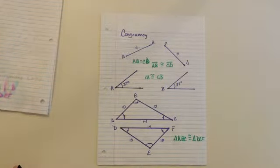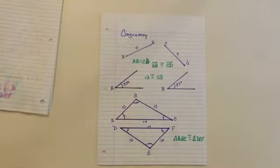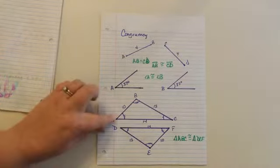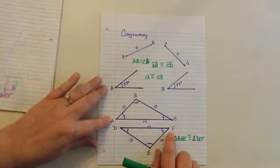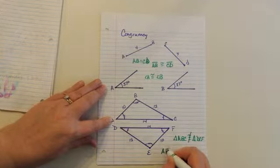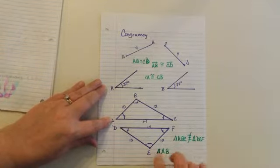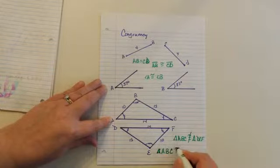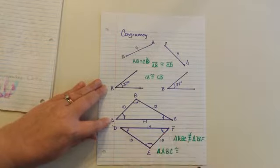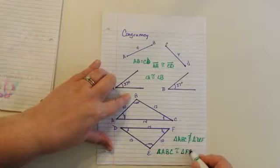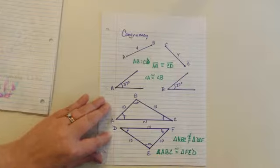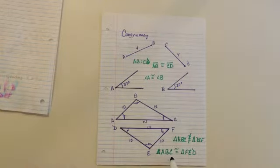When we write statements of congruency, we have to be careful to write the corresponding angle letters in the same order. I need to make sure I did that correctly — angle A is actually congruent to angle F, so triangle ABC is actually congruent to triangle FED: A corresponds to F, B corresponds to E, and C corresponds to D. So triangle ABC is congruent to triangle FED — it is not congruent to DEF.